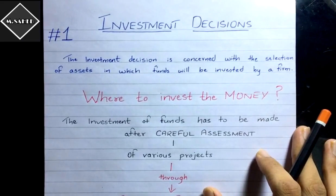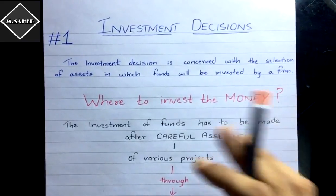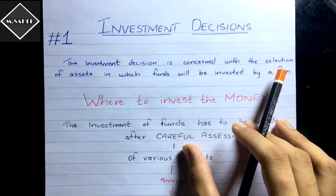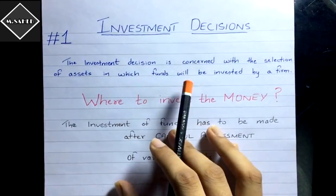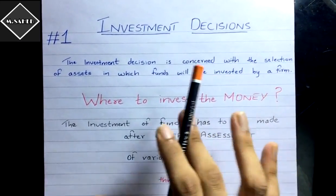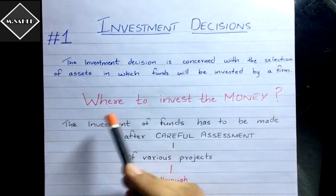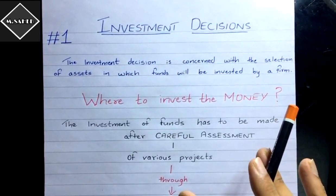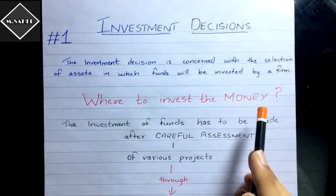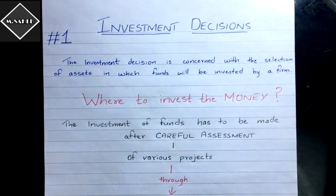So what do you mean by investment decision? Here I have written the meaning: the investment decision is concerned with the selection of assets in which the funds will be invested by a firm. It is related to how to invest the money and where to invest the money — that is what this chapter focuses on.